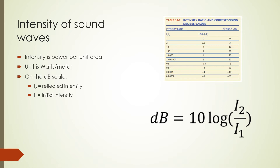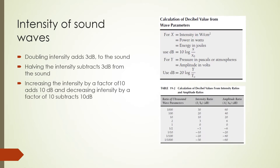A formula for calculating sound decibels is shown on this slide. For sound parameters given in terms of intensity, power, or energy, decibels equal 10 times the log of the intensity ratios. If wave parameters are given in pressure units or amplitudes, decibels equal 20 times the log of the amplitudes or pressure ratios. Increasing the wave's intensity by a factor of 10 adds 10 dB, and reducing it by a factor of 10 subtracts 10 dB. Doubling the intensity adds 3 dB and halving it subtracts 3 dB.